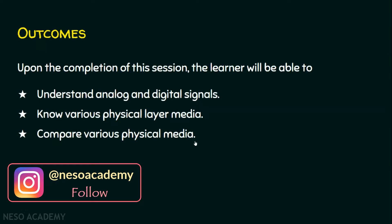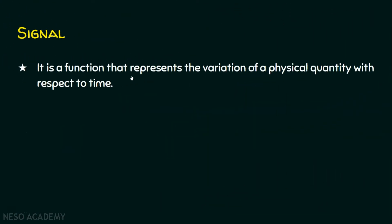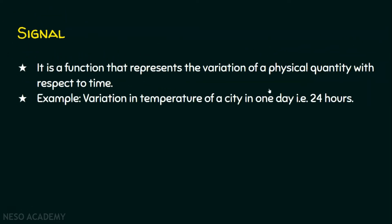We will start the session with signals. A signal is a function that represents the variation of a physical quantity with respect to time. We will take an example: the variation in room temperature of a city in one day, that is 24 hours, can be represented using signals.